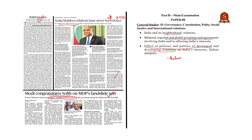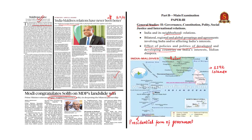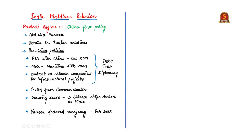Maldives is an archipelago consisting of 1,192 islands located to the southwest of India. It is separated from the Lakshadweep islands of India by the 8-degree channel. The capital of Maldives is Malé, which is located to the north of the equator. Politically, Maldives follows a presidential form of government where the president is the real head of state. We shall orient our discussion with respect to the changing dynamics of India-Maldives relations over the past few years — what happened in the previous regime, the change of government, and how it is changing bilateral equations.